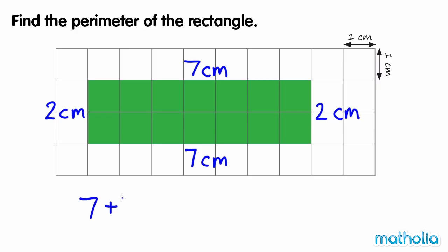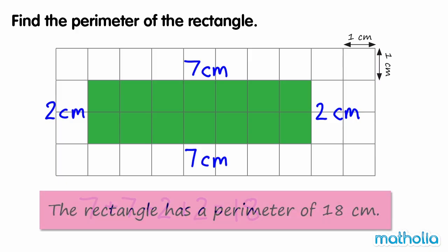7 plus 7 plus 2 plus 2 equals 18. So the rectangle has a perimeter of 18 cm.